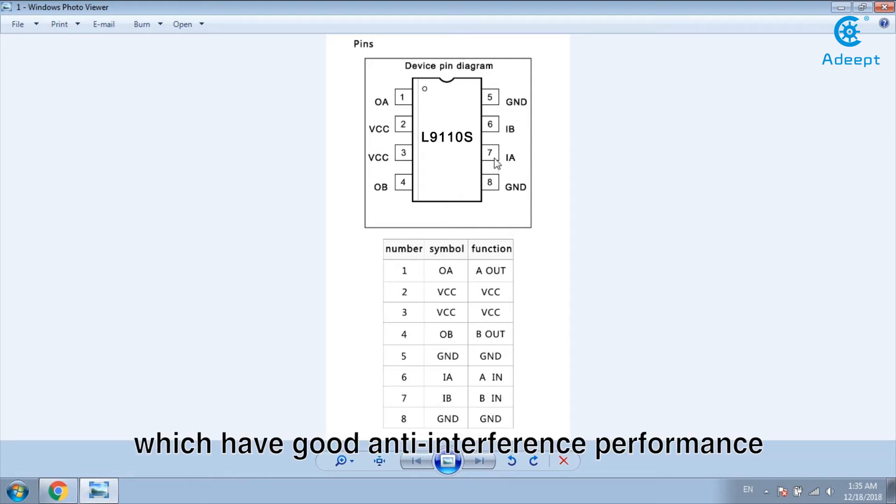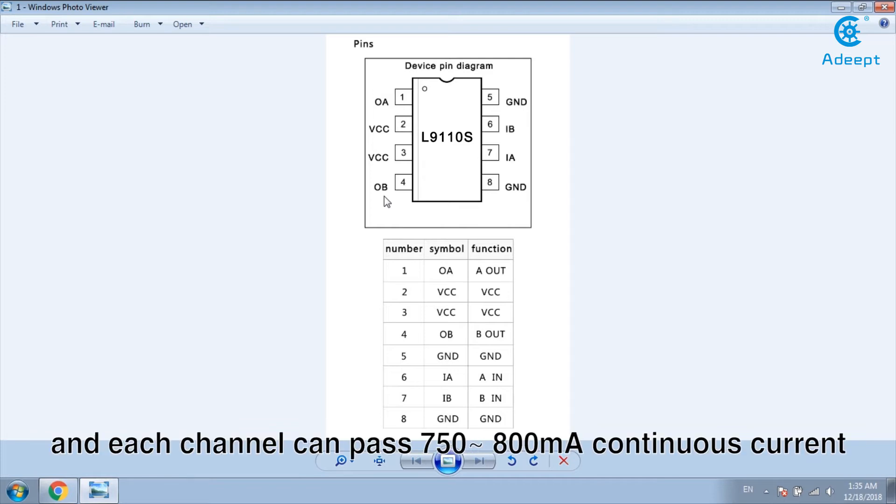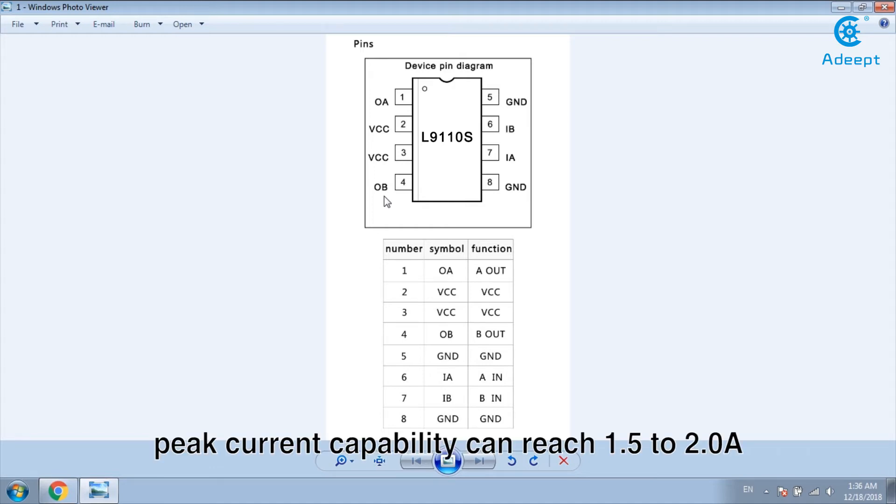And the two outputs can directly drive the forward and reverse movement of the motor. It has a large current driving capability. Each channel can pass 750-800mA continuous current. Peak current capability can reach 1.5-2A.